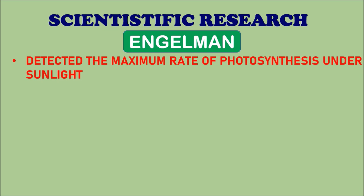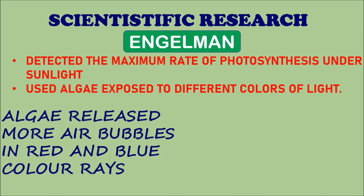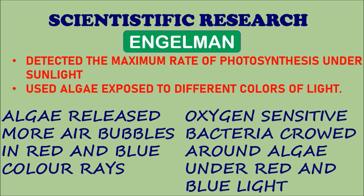Angelman detected the maximum rate of photosynthesis under sunlight by using algae exposed to different colors of light. He observed two things: first, algae released more air bubbles under red and blue color rays; second, oxygen-sensitive bacteria crowded around algae under red and blue light. With these observations, he concluded that light plays a major role in the process of photosynthesis and that oxygen is released during this process.